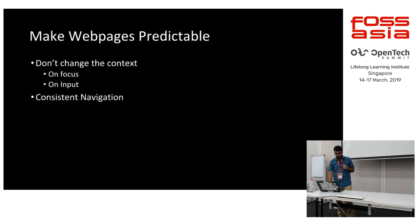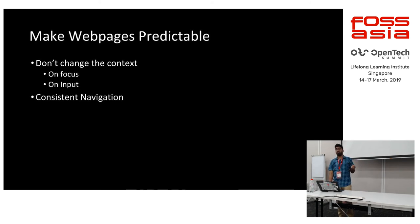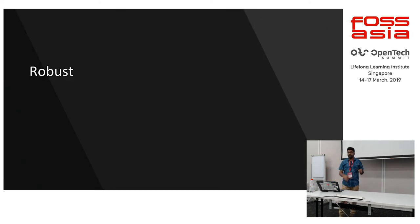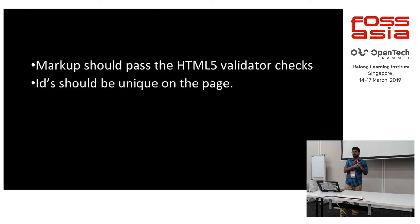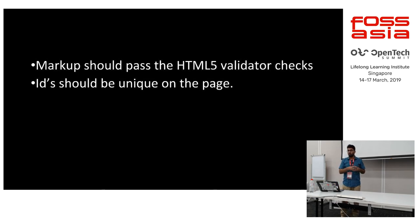Make web pages predictable — don't change context just by changing focus. The last guideline is Robust. Content must be robust enough to be interpreted by a wide variety of user agents, including assistive technologies. Robust is a principle of future technologies — whatever you design today must also be applicable in the future. So you need to take care of valid HTML and ensure IDs are unique on the page.